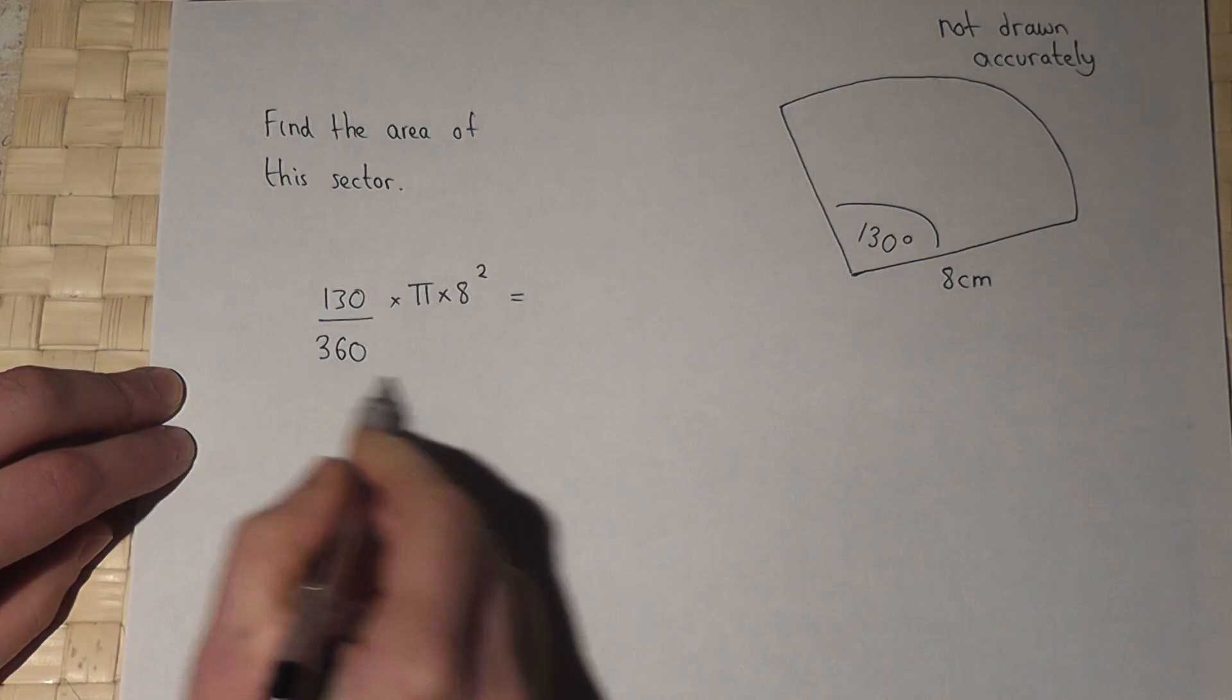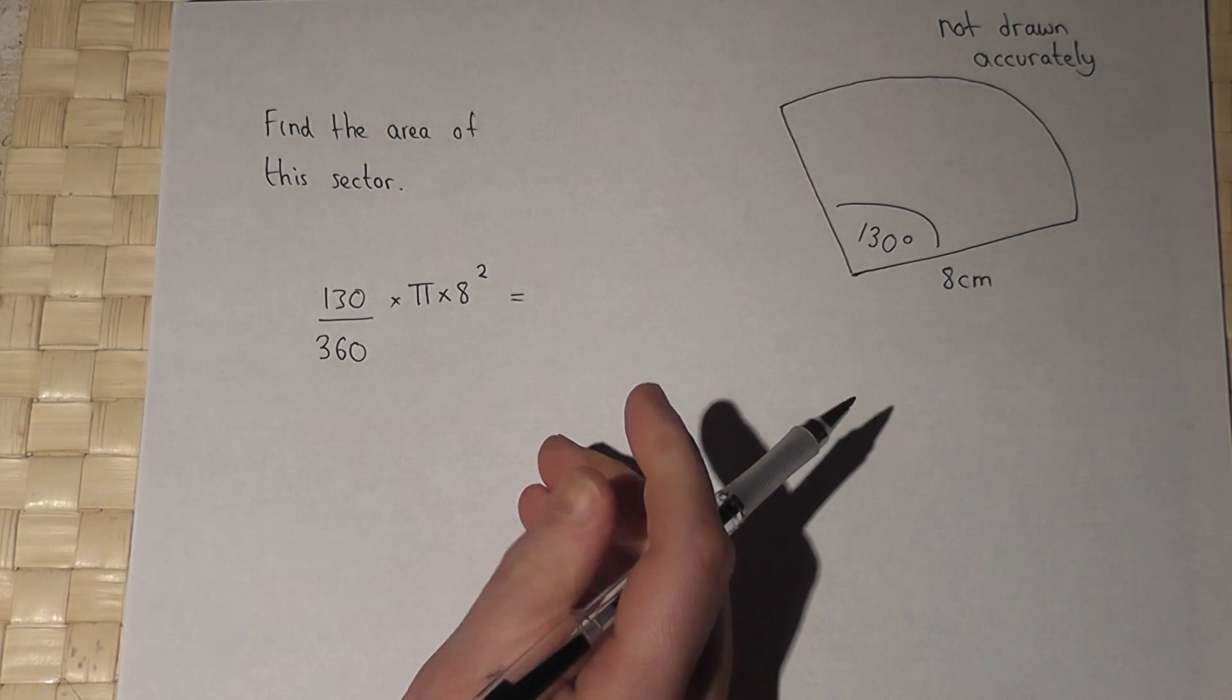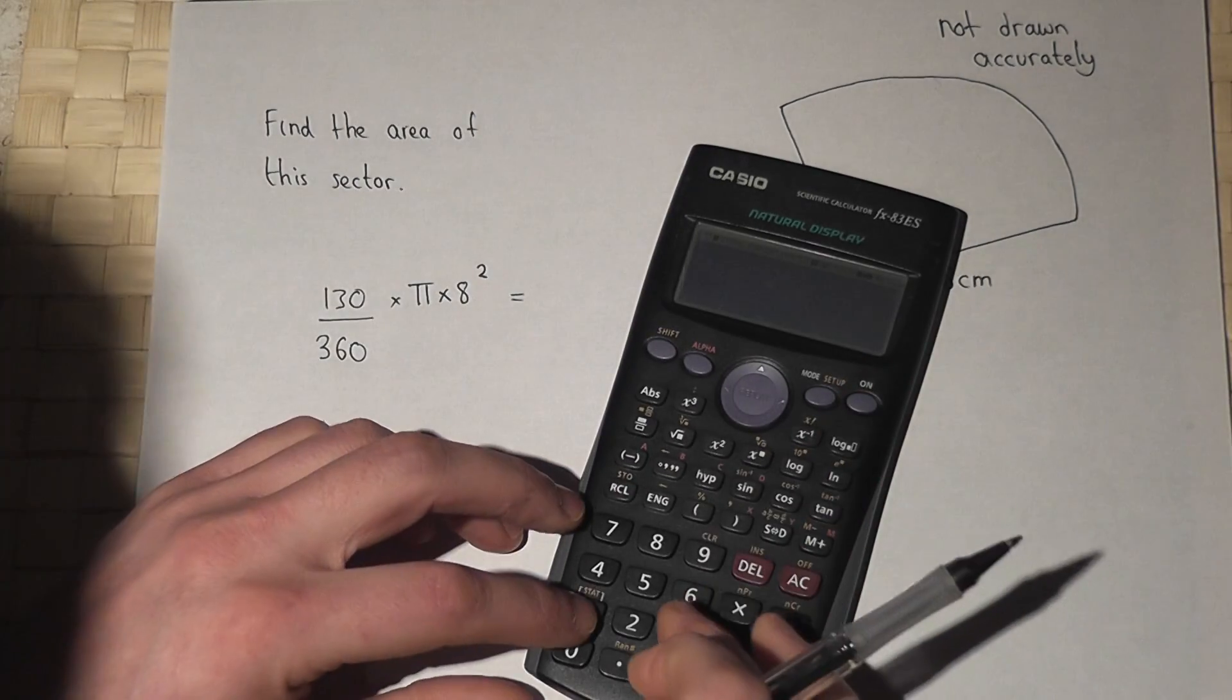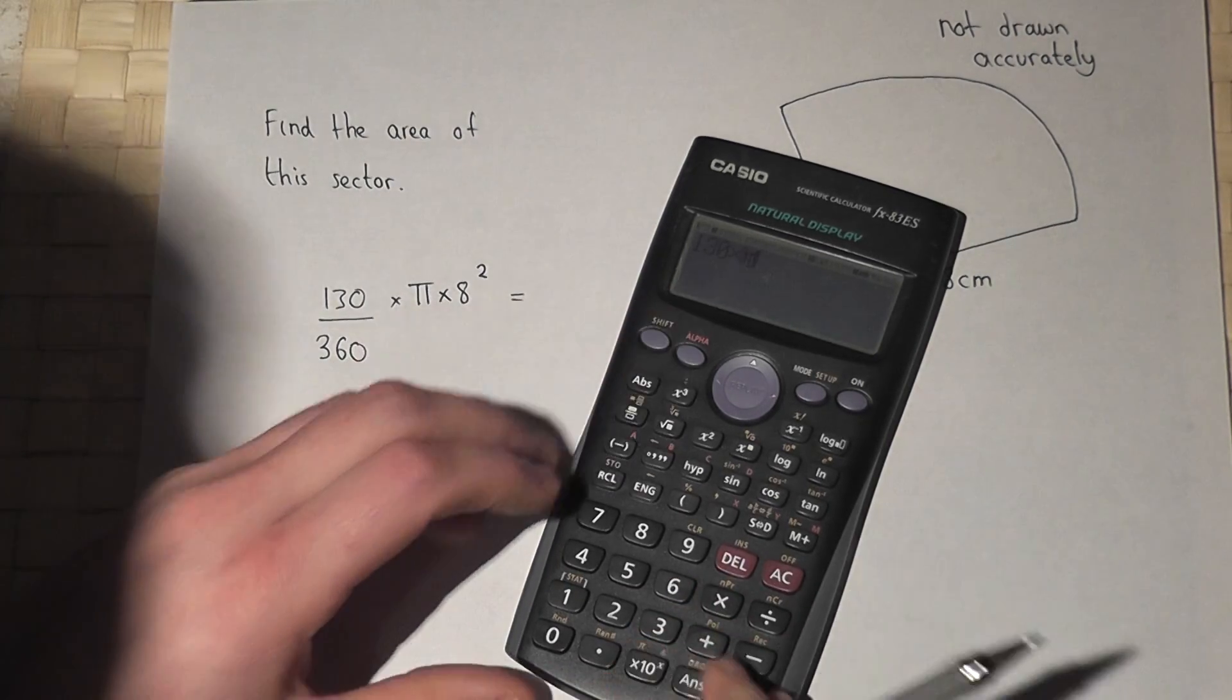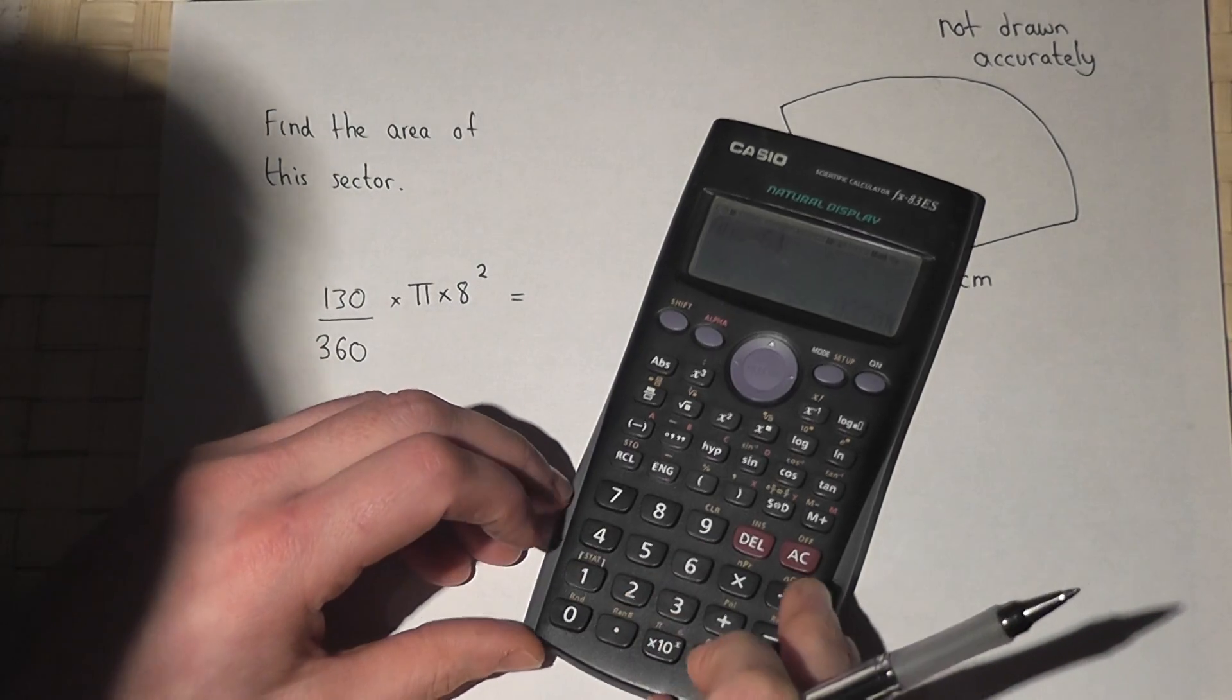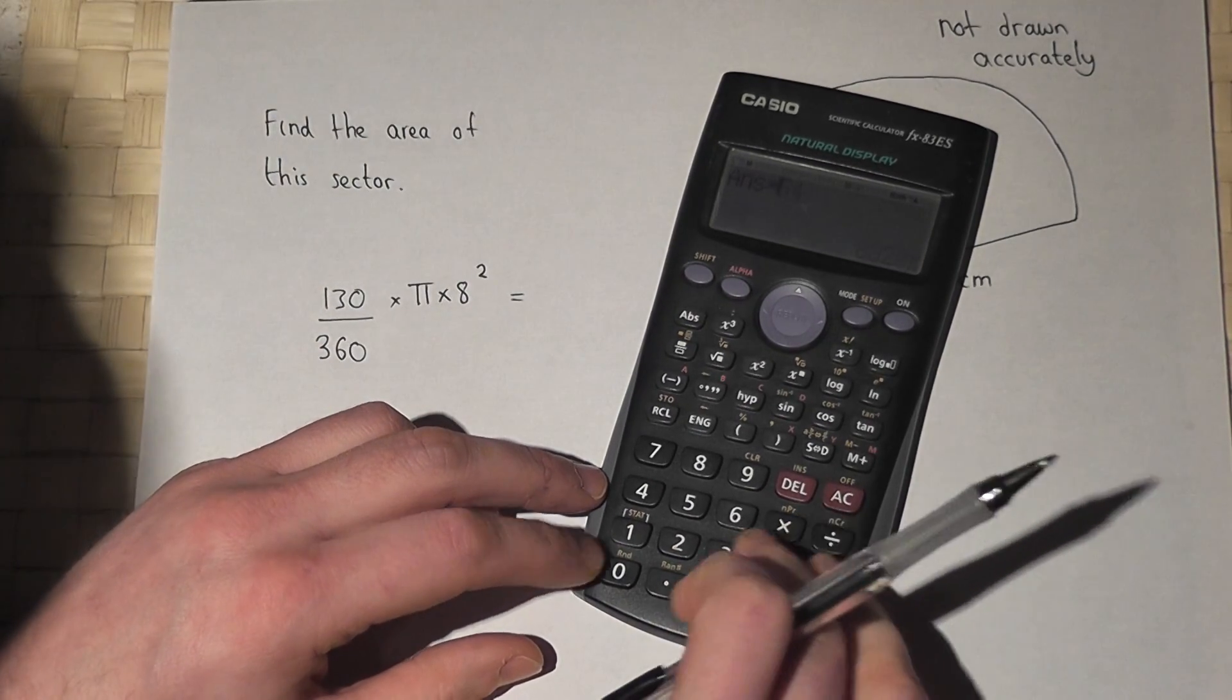So if I work out this on my calculator, it will give me the area of the sector. So, 130 times by pi, 8 squared is 64, then divide by 360.